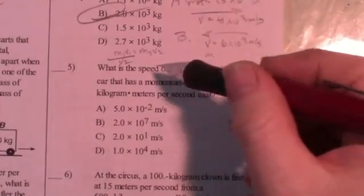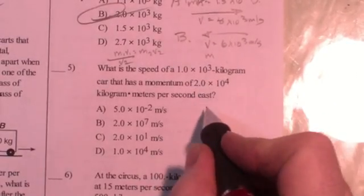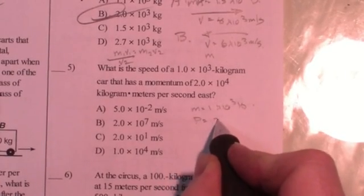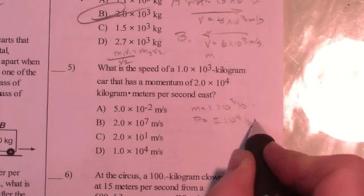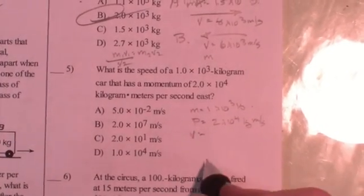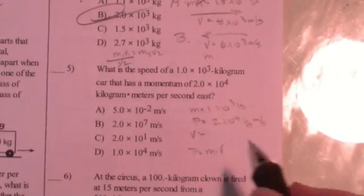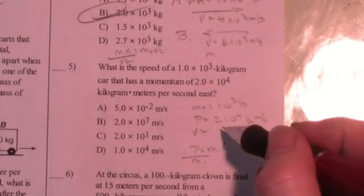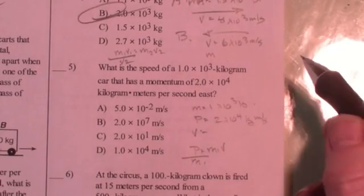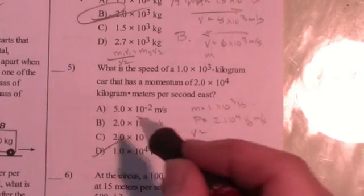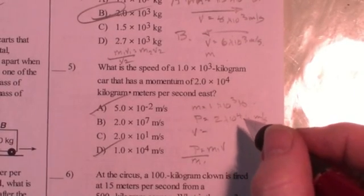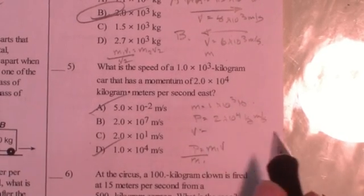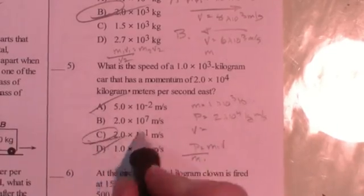Question five. What is the speed? They're giving me the mass of 1 times 10 to the 3 kilograms. They're giving me its momentum of 2 times 10 to the 4 kilogram meters per second. And they're looking for velocity. Momentum is equal to mass times velocity from the formula sheet. I'm looking for velocity, so I divide by mass. So I've got 2 times 10 to the 4 divided by 1. So my answer's got to be 2 something. 2 times 10 to the 4 divided by 1 times 10 to the 3, I'm dividing so I subtract my exponents. 4 minus 3. My answer's got to be C.